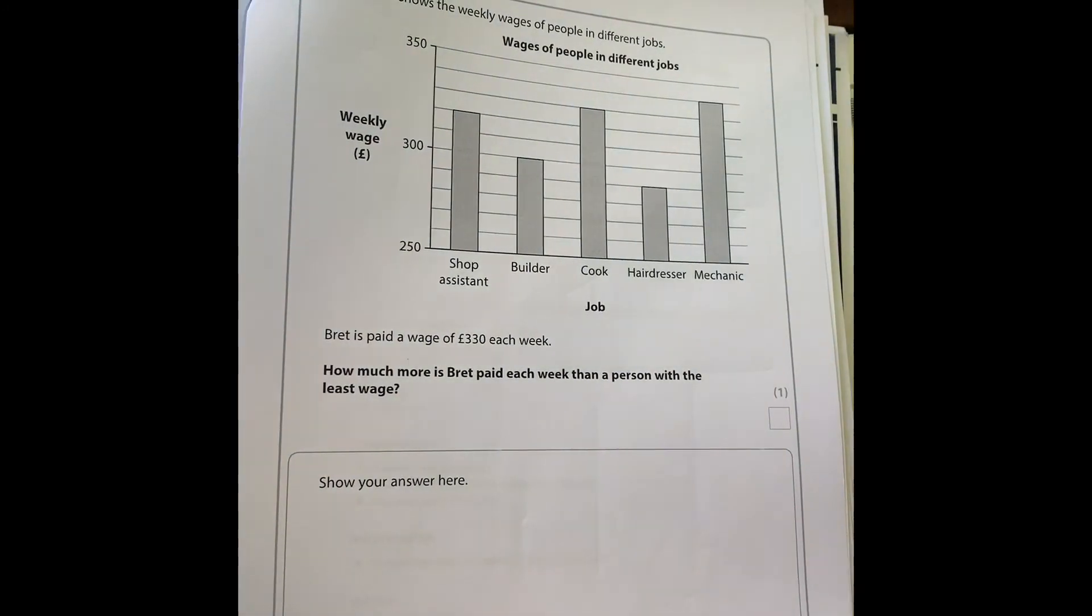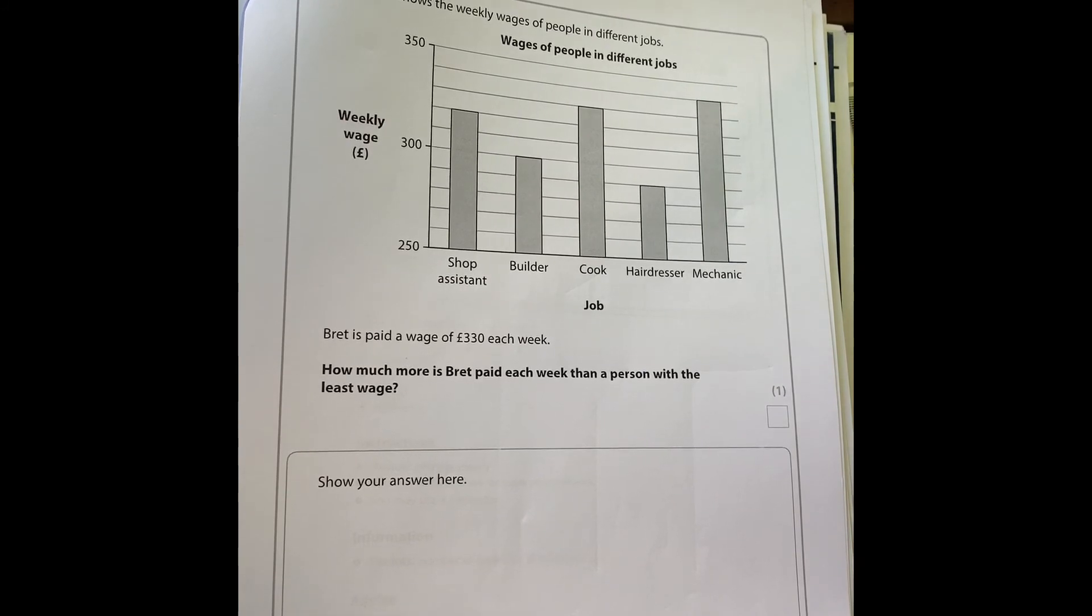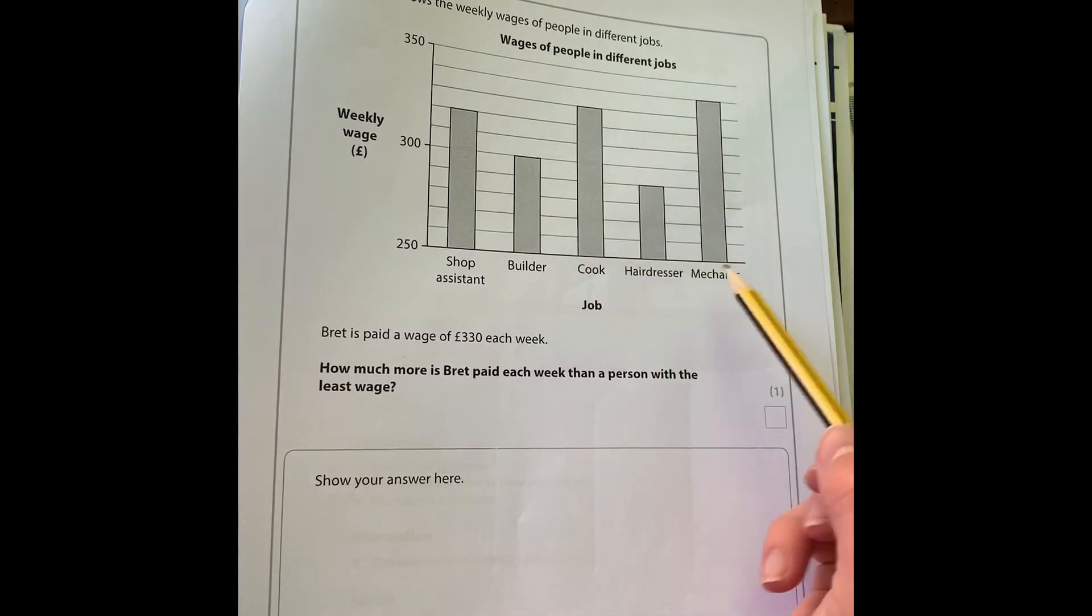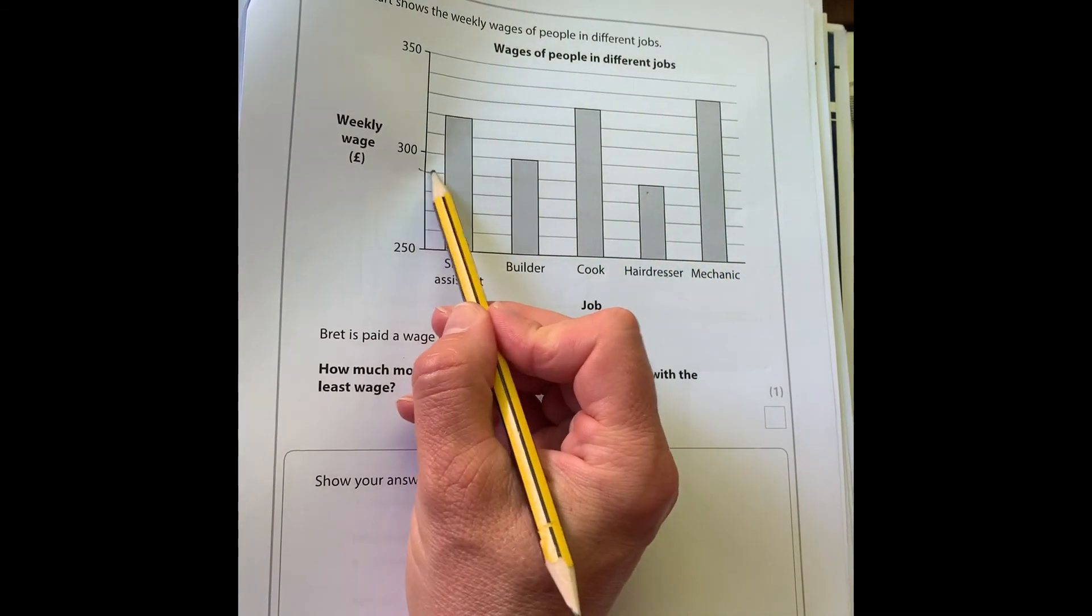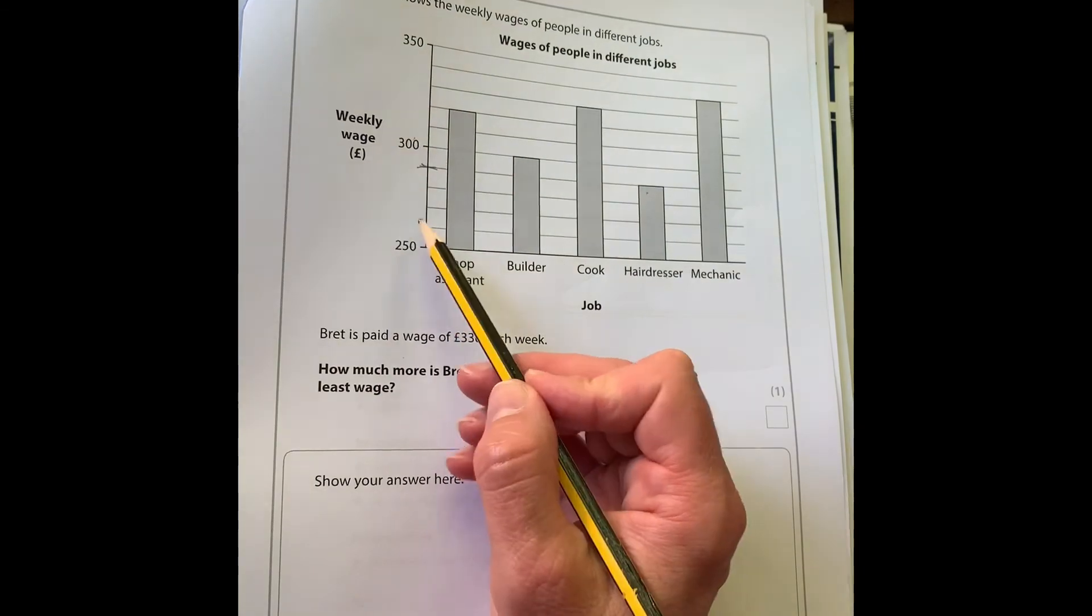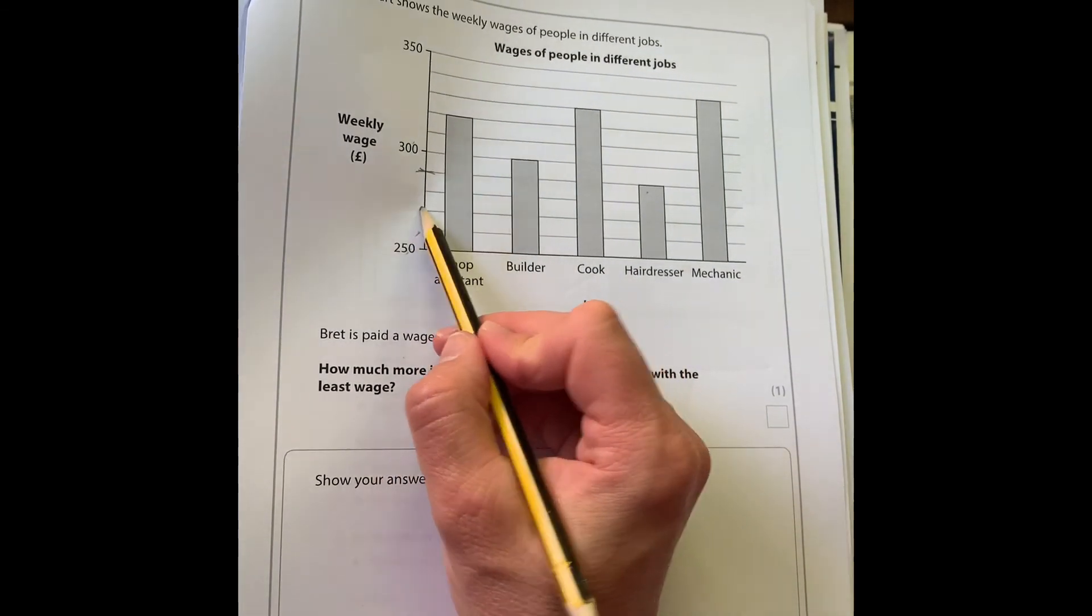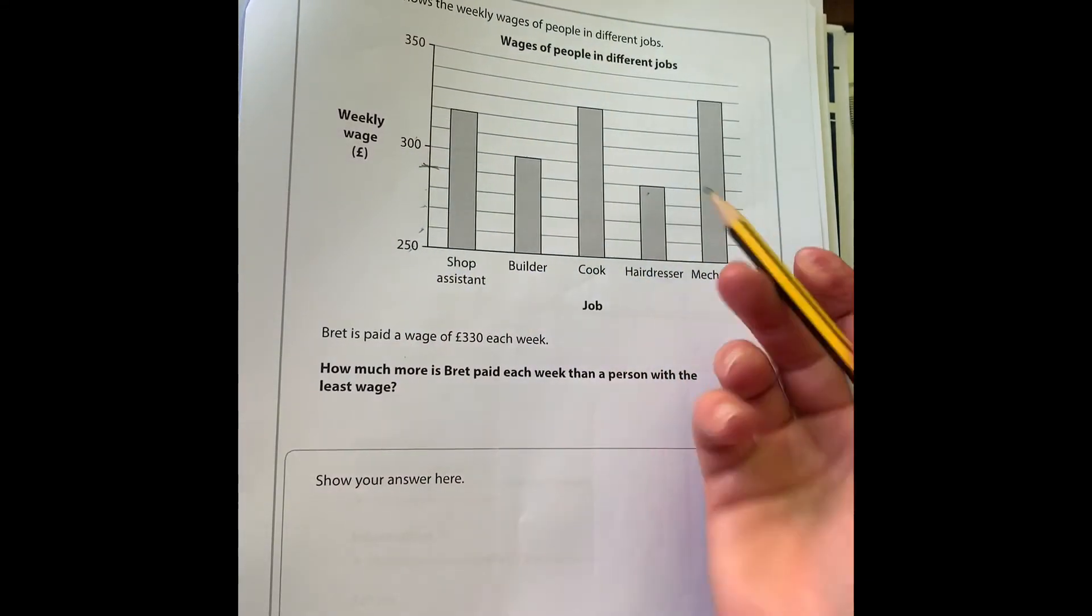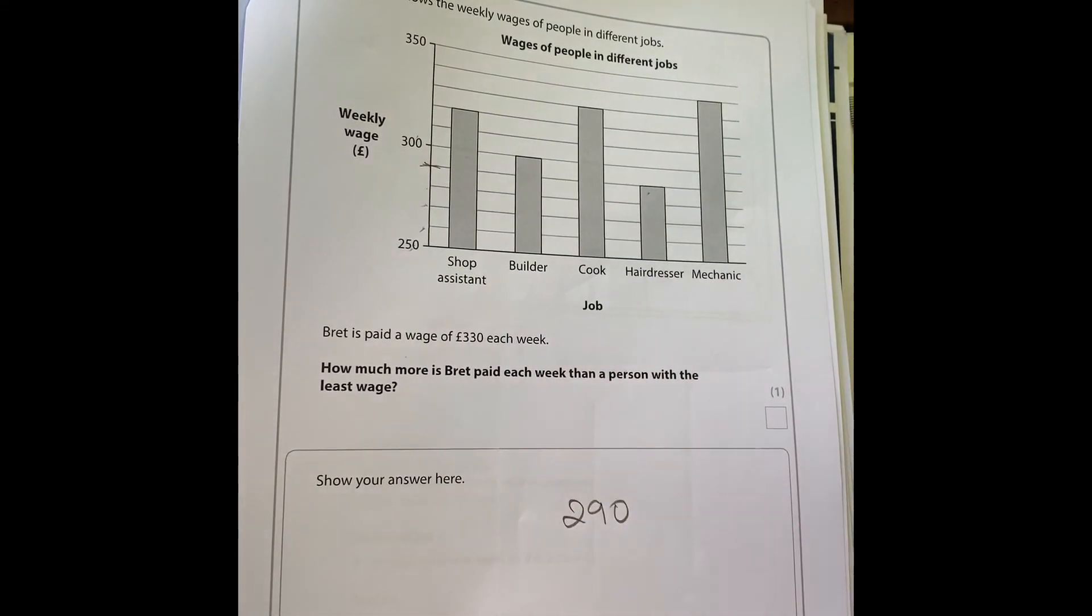We're nearly there. Number 17. Here's a chart showing how much more Brett is paid each week than a person with the least wage. If Brett is paid 330 pounds each week, we are looking for the person with the least wage. We can see the shortest bar is the hairdresser. We need to work out what each division is worth. Because we're going up to 300, each of these is going to be worth 10. So 260, 270, 280, 290. The hairdresser earns 290 pounds a week.